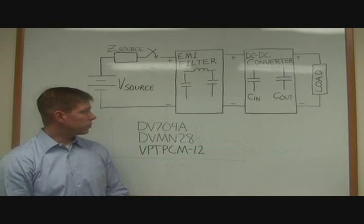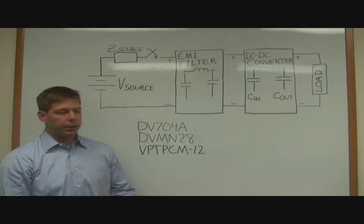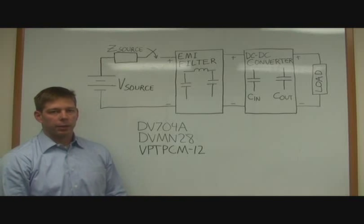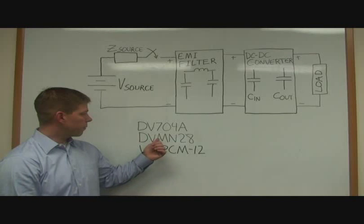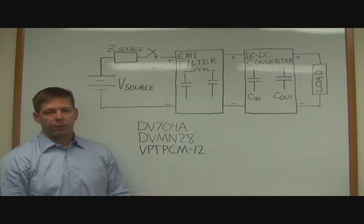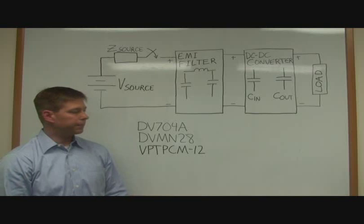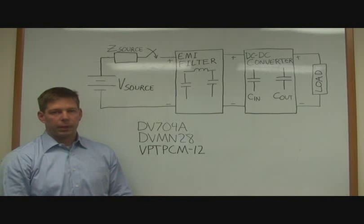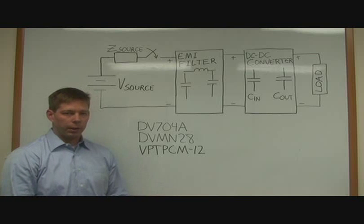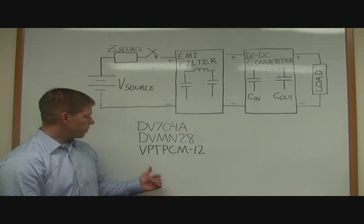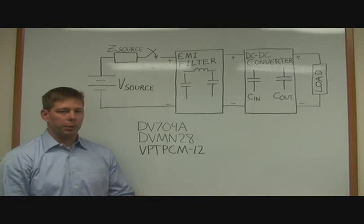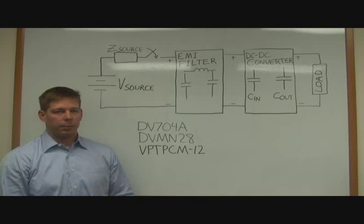Now, in systems where inrush current limiting is an issue and is required, VPT offers several products that can control inrush current. This DV704A is a 2-amp EMI filter with integrated inrush current limiting, DVMN28 is a 14-amp EMI filter with integrated inrush current limiting, and the VPT-PCM is a preconditioning module that does not have an EMI filter but does offer inrush current limiting.